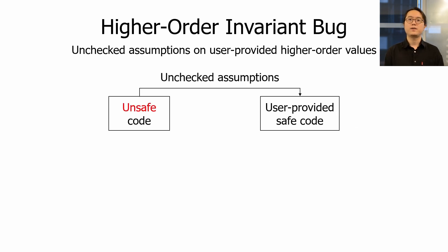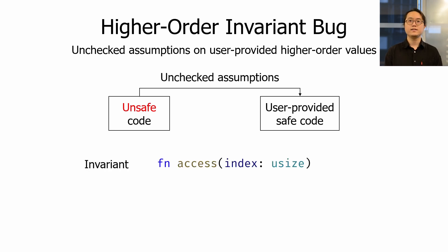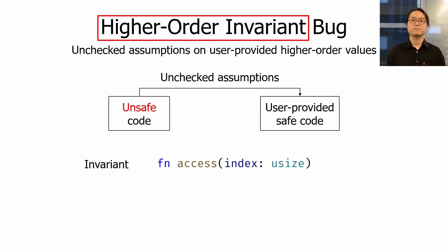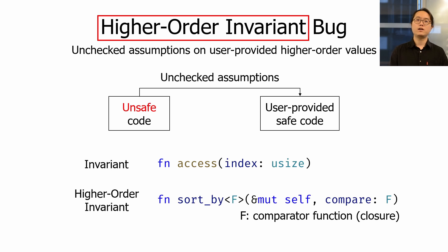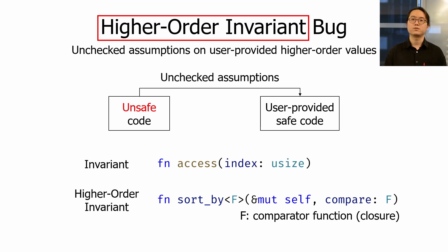Higher-order invariant bugs are caused by unchecked assumptions on user-provided higher-order values. Recall the access function: it is defined as a safe function, so it must check that the index is in-bounds before using unsafe code — that's a basic invariant check. As a high-level language, Rust allows programmers to pass not only values but also custom logic in forms of a type parameter or a closure. For instance, Rust arrays have a sort-by function that takes a comparator from the user and sorts based on it. Just like access must check the index invariant, sort-by must also check the comparator invariant. Unfortunately, guaranteeing higher-order invariants is much more difficult than checking simple value invariants.